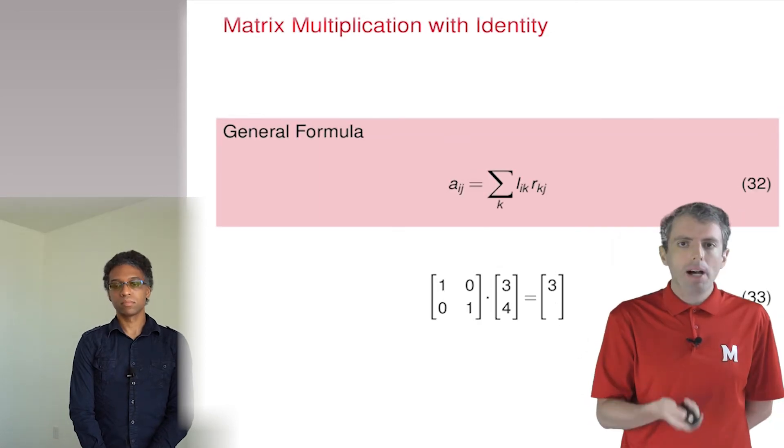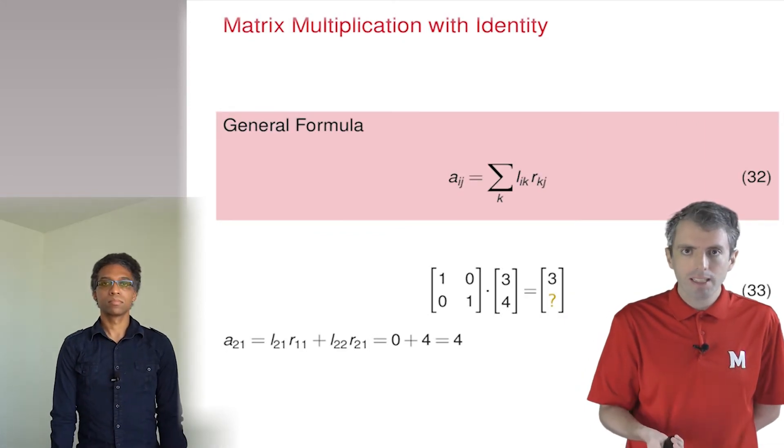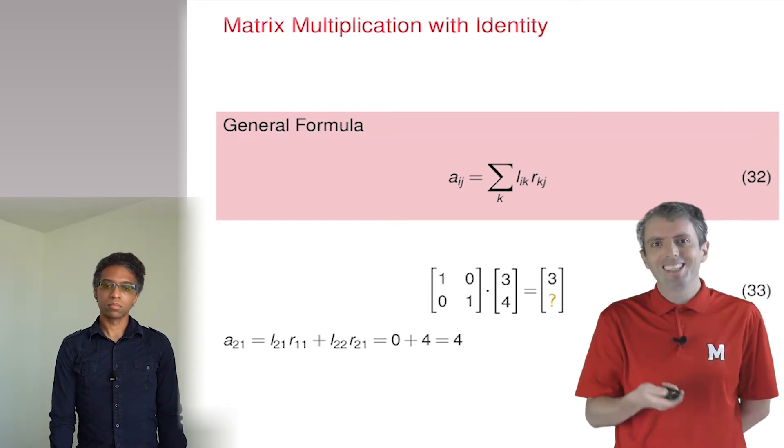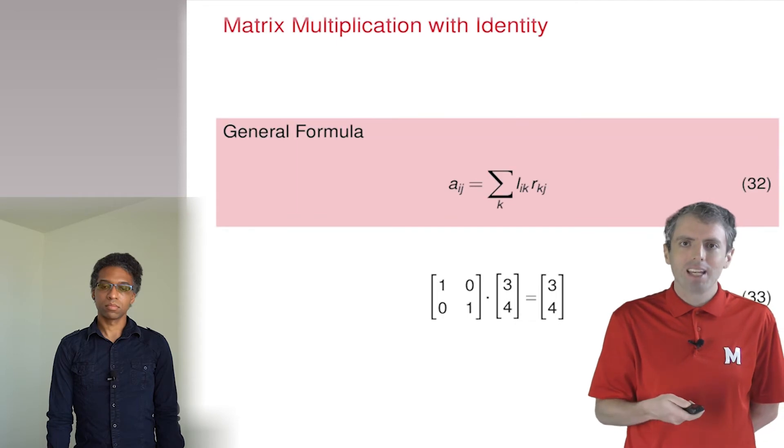And then the bottom cell is zero times three plus one times four, which, as you promised, gave us back the vector three four. What's next?